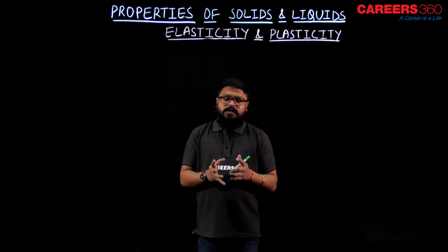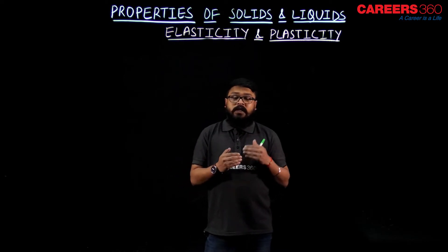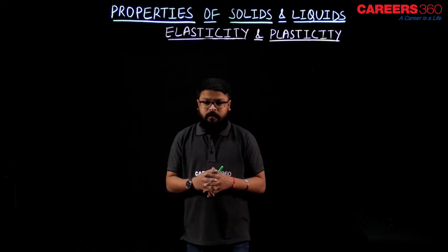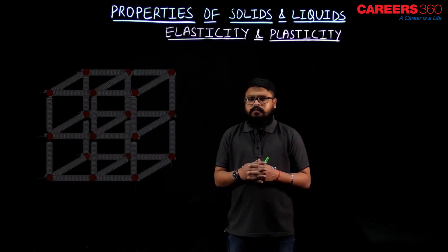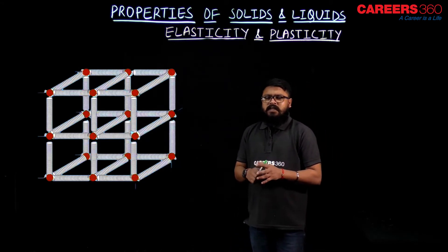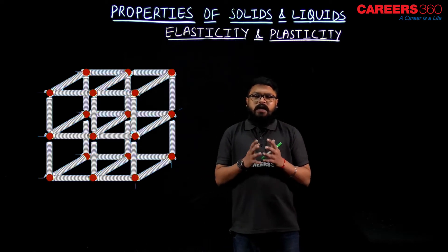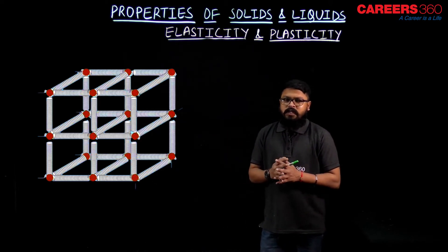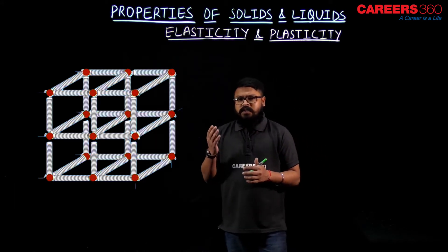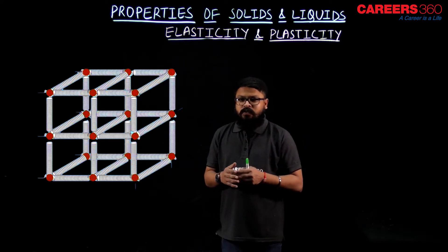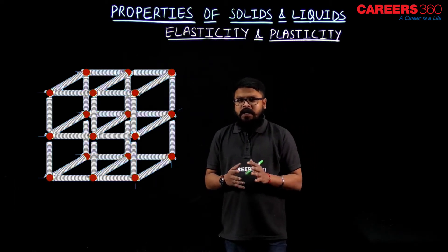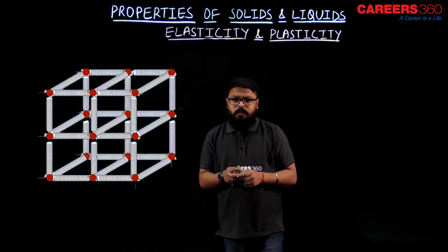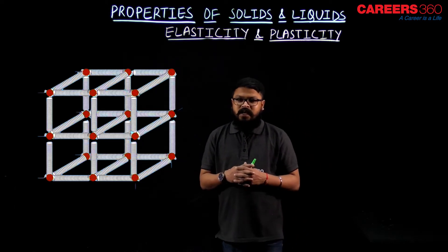But actually what happens is we can change the shape or size of rigid bodies by applying enough or sufficient external force on them. As you can see, bodies are composed of minute particles which we call molecules or atoms. This structure can be considered the structure of molecules, and as you can see, the distance between them is fixed — this is the structure of a rigid body at a very minute level.